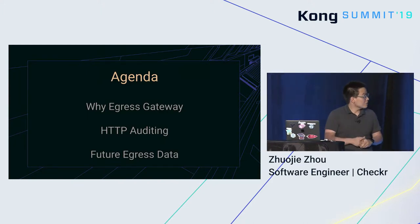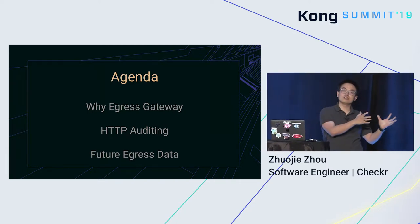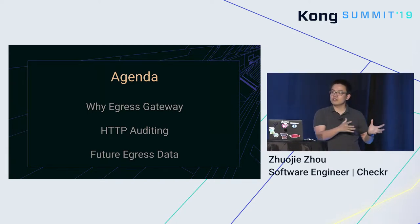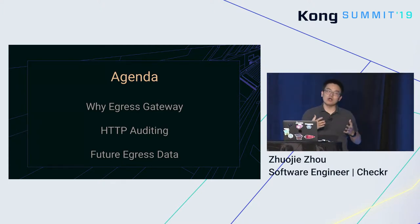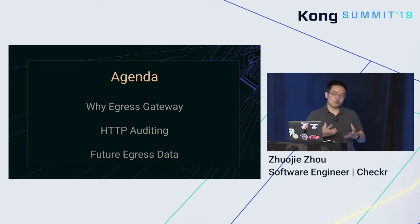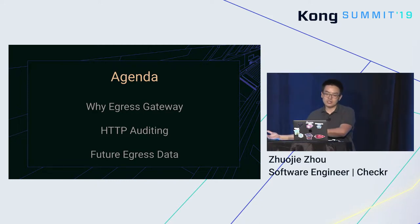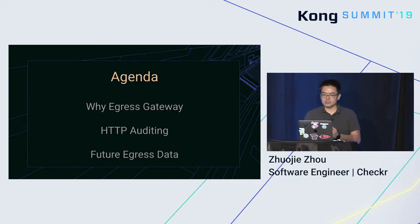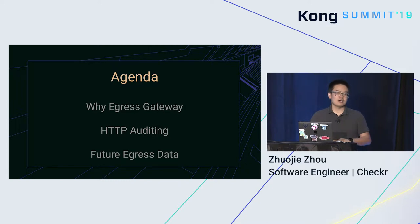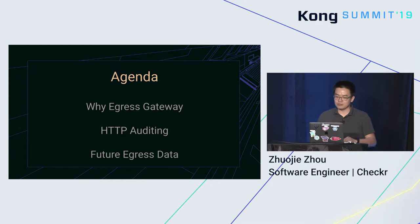Today we're going to cover three things. First, the advantages of the egress gateway pattern. Second, we're going to talk about HTTP auditing — the raw HTTP requests and response body. And last but not least, we're going to talk about future egress gateway data usage. We'll have dedicated time at the end to answer questions, so feel free to step up to the microphone.